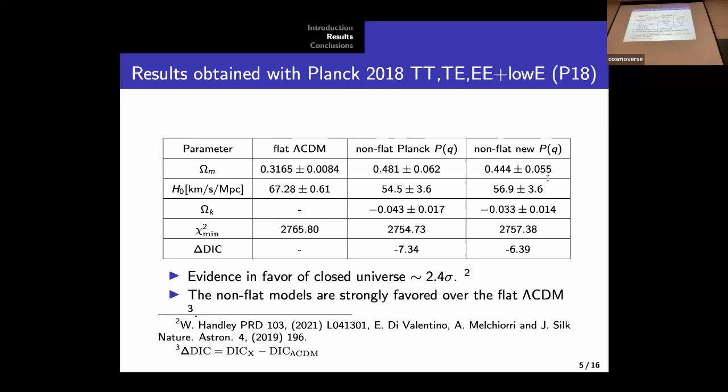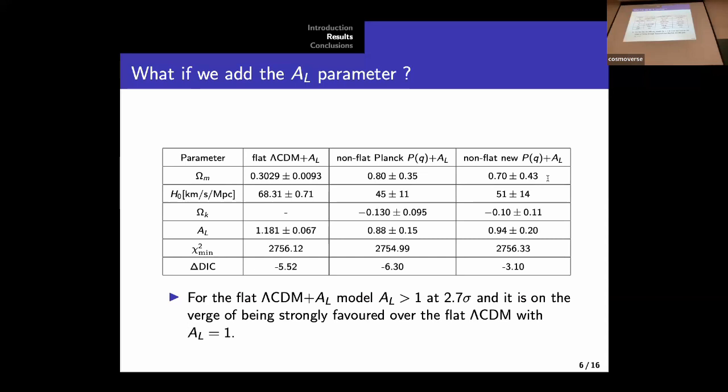And also, we obtain low values for the Hubble parameter. So of course, this is the geometrical degeneracy coming into play. But we do see a clear reduction in the values of the minimum, in the minimum value for the chi-square function. This is also reflected in the values for the DIC criteria, or the differential in the DIC. So this means that these models, the curvature models, are strongly favored compared with the flat lambda CDM model.